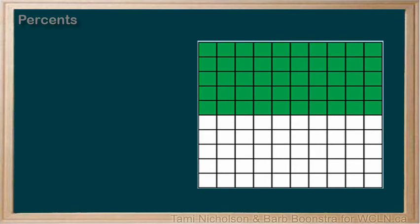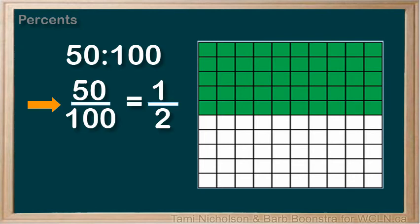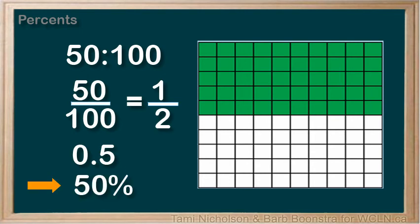You have four ways of expressing a percent. In ratio form, this is 50 out of 100. In fraction format, 50 over 100 reduces to one-half. In decimal format, 50 over 100 is 0.5. In percent format, 50 to 100 is 50%.